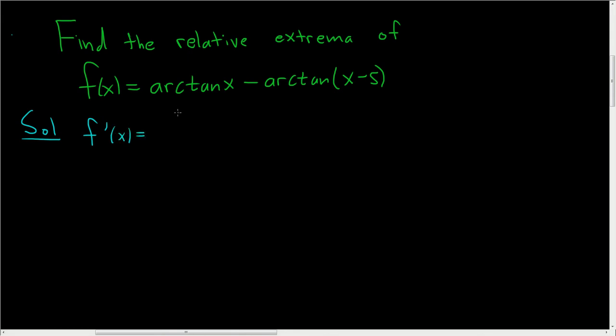So the derivative of arctan is 1 over 1 plus x squared minus, and then here, when you take the derivative, it's 1 plus x minus 5 squared times the derivative of the inside piece, which is simply 1. And we set this equal to 0.